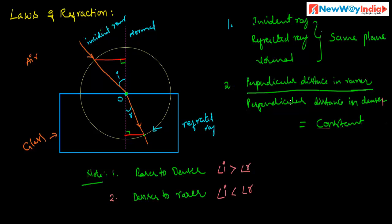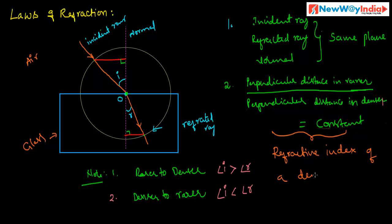This second relation gives the refractive index of the denser medium. The ratio of perpendicular distance in the rarer medium to perpendicular distance in the denser medium is constant, and this constant gives the refractive index of the denser medium. Here the denser medium is glass. Thank you.